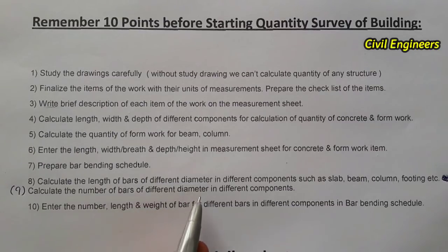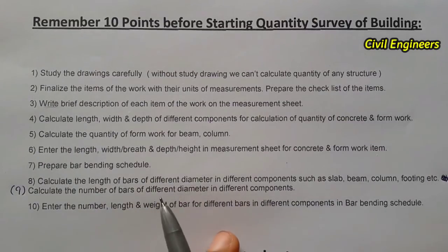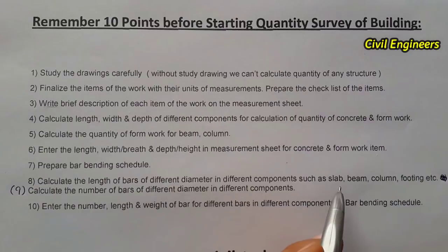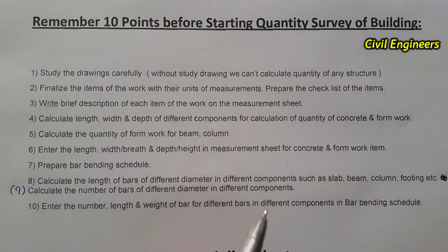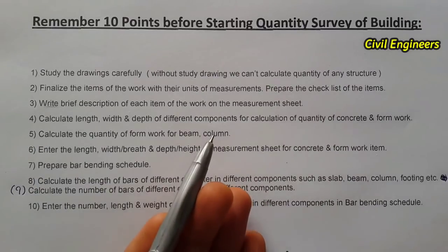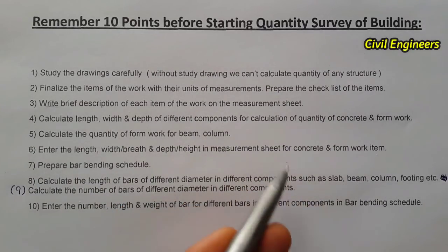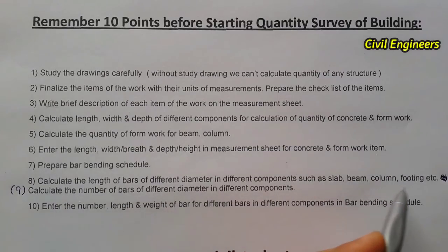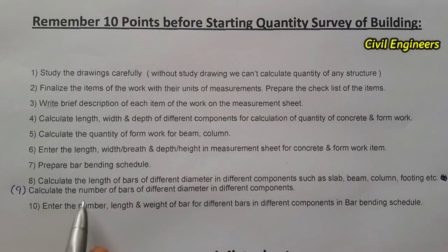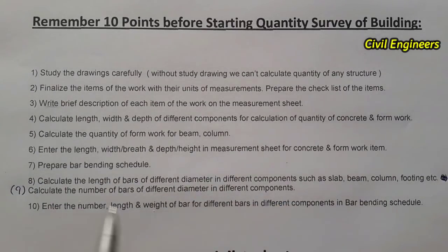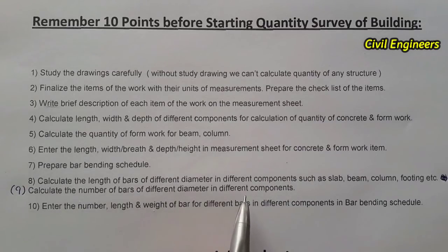The ninth point is to calculate the number of bars of different diameters for different components. For example, components like slab, beam, and column have different bars — slab steel uses a different diameter, and sometimes a different diameter is used in columns and footings as well. This is an important point that is sometimes forgotten at site when finding the quantity of any structure.